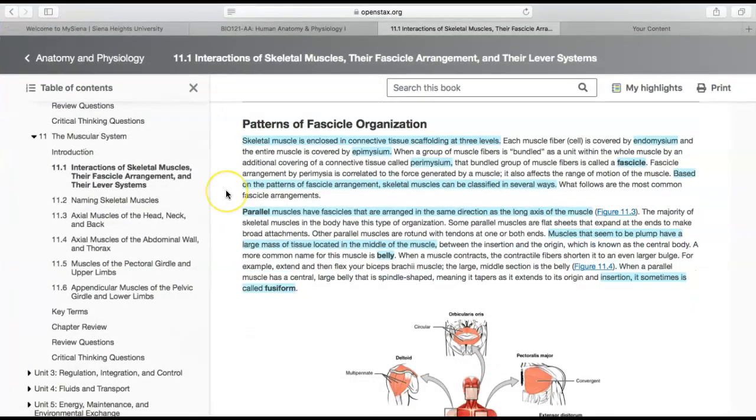Let's get into patterns of fascicle organization. We talked about in chapter 10 the organized fascicle arrangement of skeletal muscle fibers. Just to quickly touch on that again, we know that skeletal muscle is enclosed in connective tissue scaffolding at three levels.